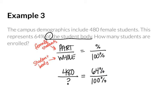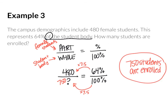When I divide 64 into 480, it goes 7.5 times. That means I multiply 100 by 7.5 to get 750 for my denominator. In the context of the problem — how many students are enrolled — 750 students are enrolled in the campus.